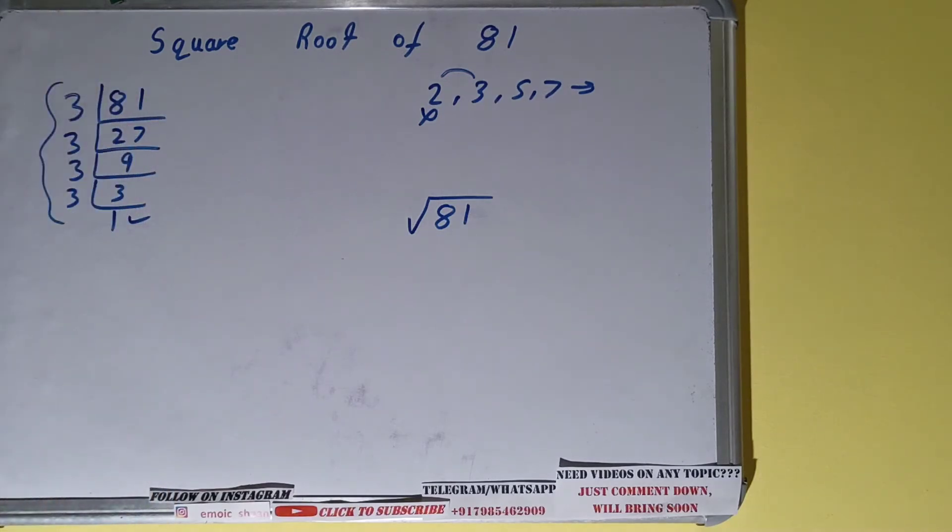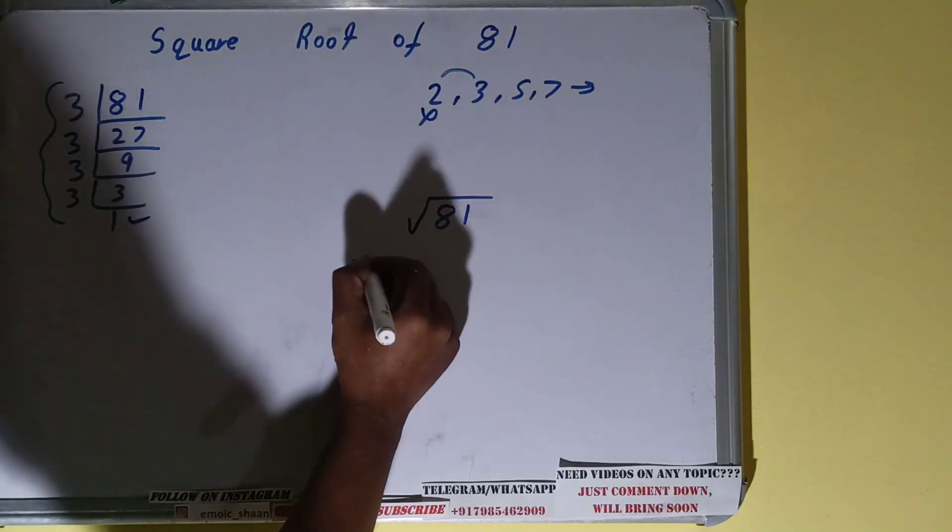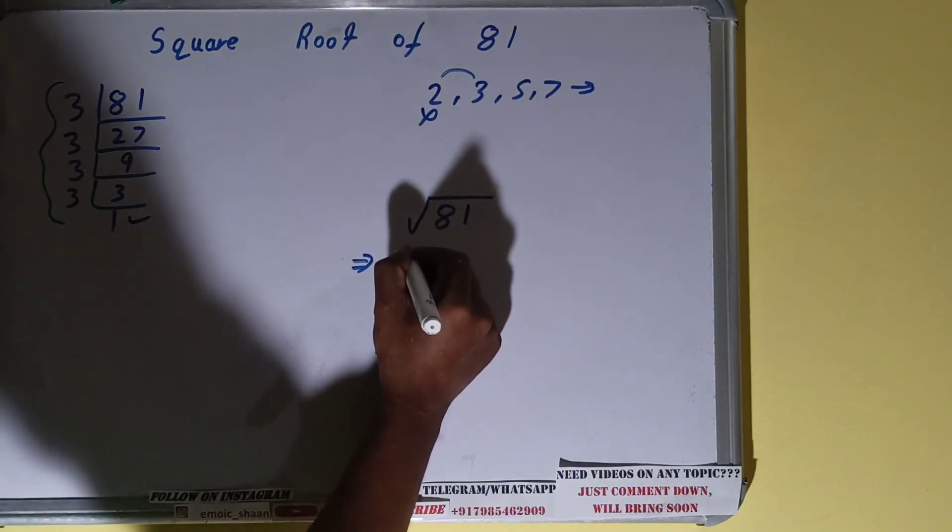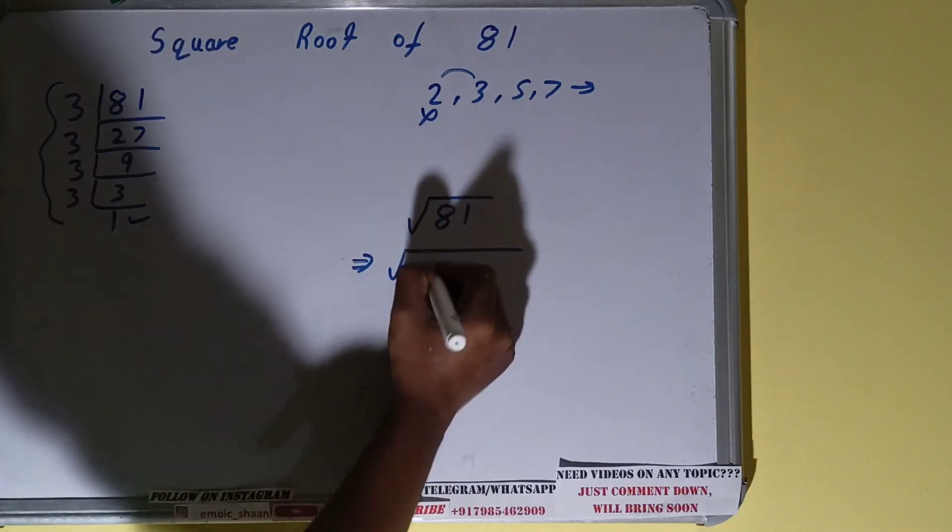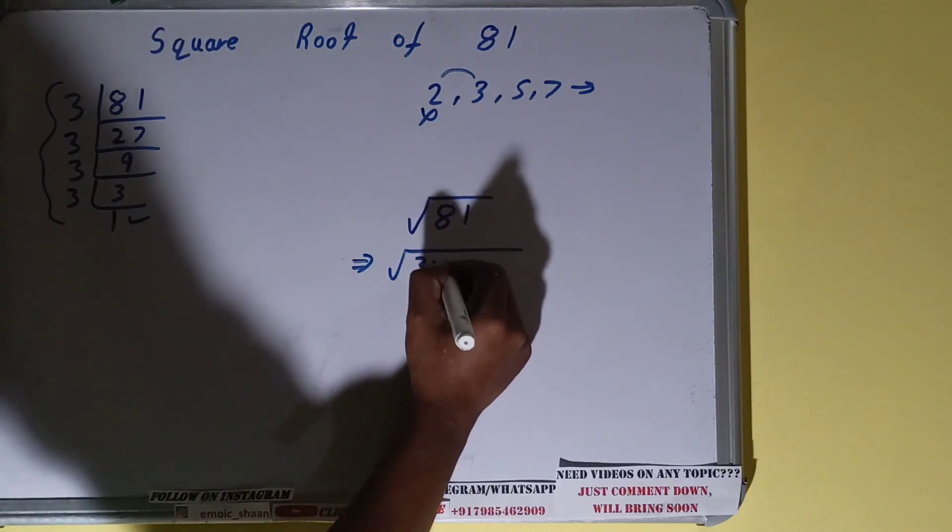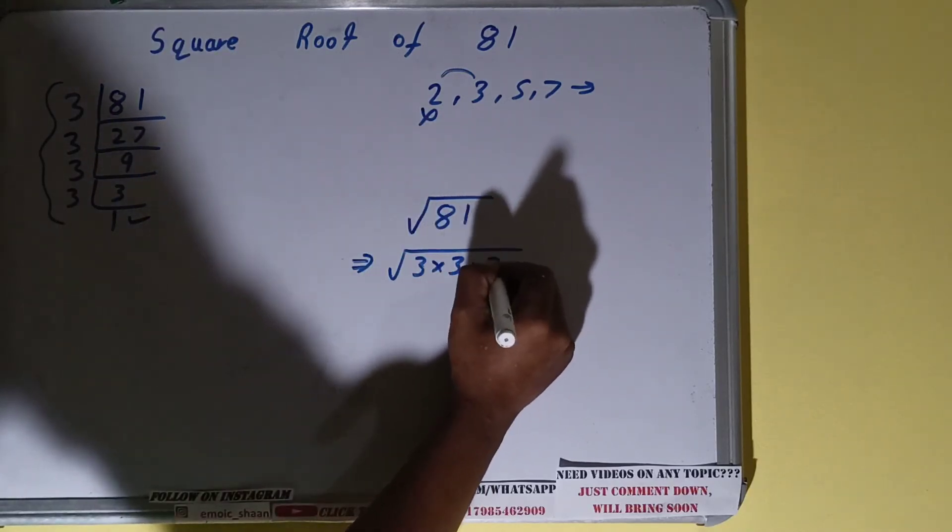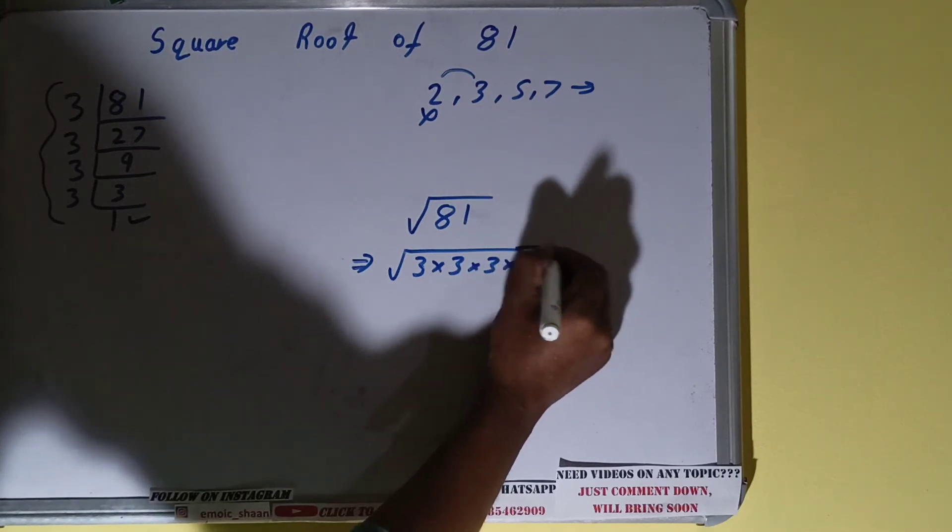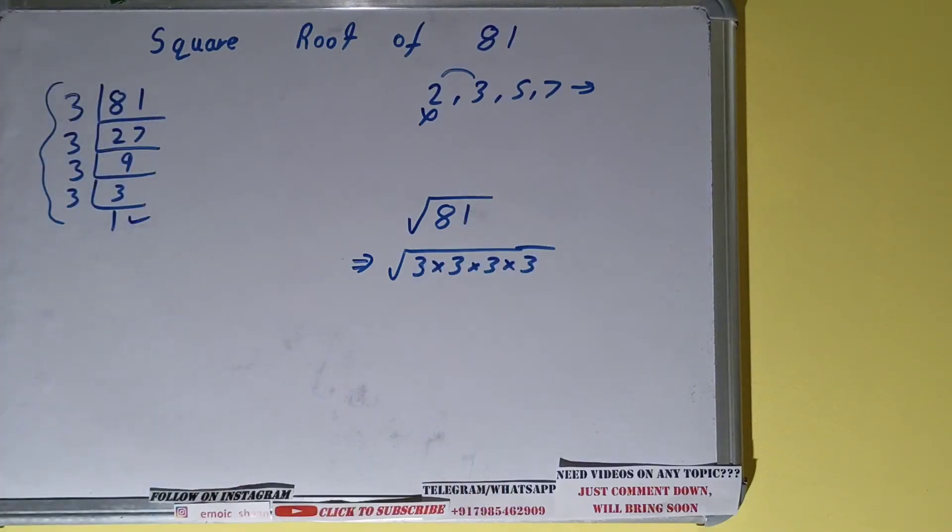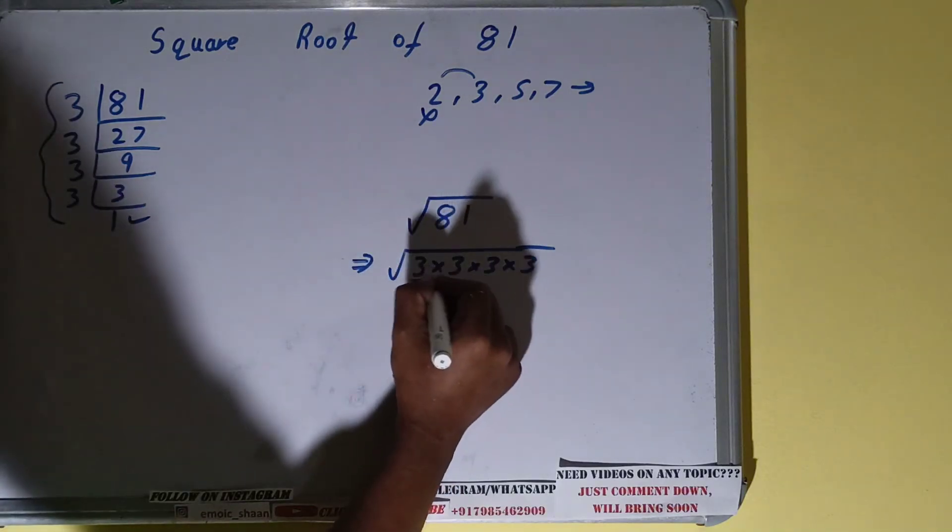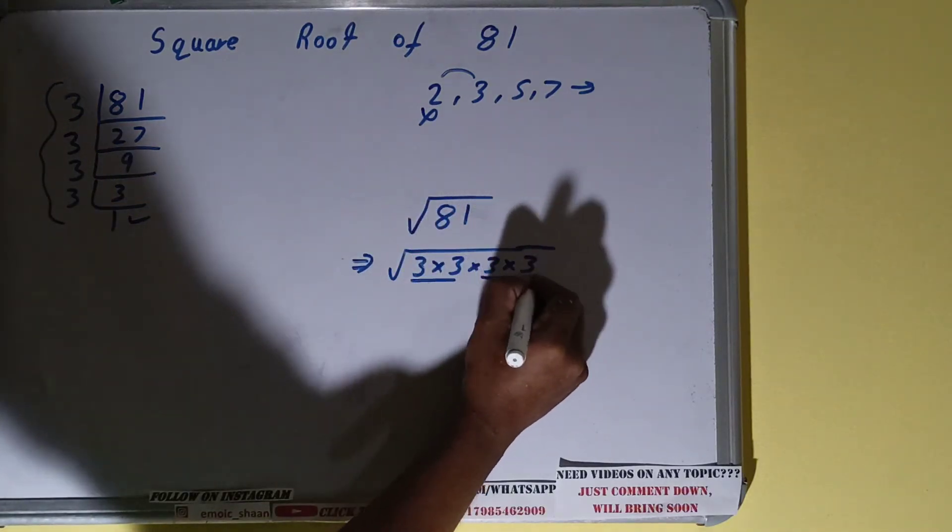So what we can do is, instead of this 81 inside the square root, we can write the set of prime numbers, that is 3×3×3×3. The next thing we need to do is underline the pairs. Pairs is basically the set of two. We have got a pair of three over here, another pair of three over here.